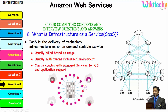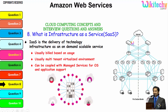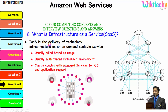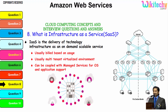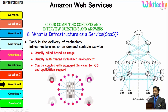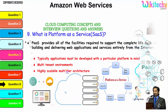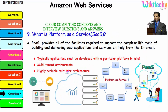Now let's talk about Infrastructure as a Service. You will be allocated with your server, and whatever OS and software you want, you can put it. IaaS is a delivery of technology infrastructure as an on-demand deliverable service — a scalable service built based on usage, usually multi-tenant and virtualized, and can be coupled with managed services for OS and application support.